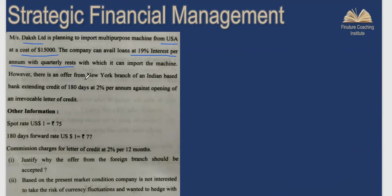Option two: the same Indian bank has a branch in New York offering the company a letter of credit facility at 2% per annum. So instead of borrowing and holding $15,000 on its books, the company can avail the letter of credit facility at a cost of 2%. The key difference is that in the letter of credit option, the company does not actually buy this amount from the bank.